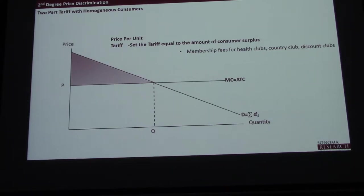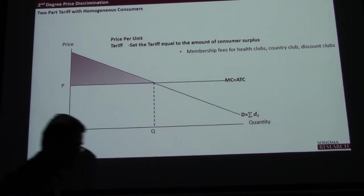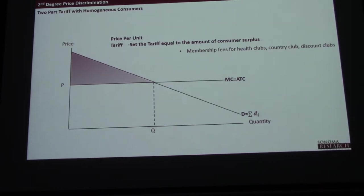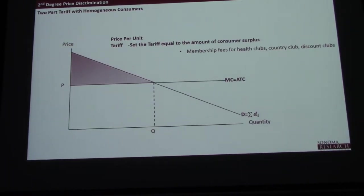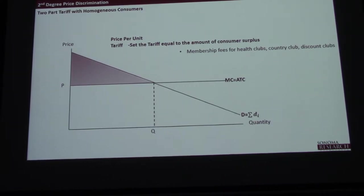Pretty common — Costco, health clubs, country clubs. What does it cost to get into a country club nowadays? It's usually a couple hundred thousand. And to play golf it's usually pretty cheap — in fact, sometimes it's free. I was told at the Sonoma Valley Golf Club it's like three bucks to play golf.